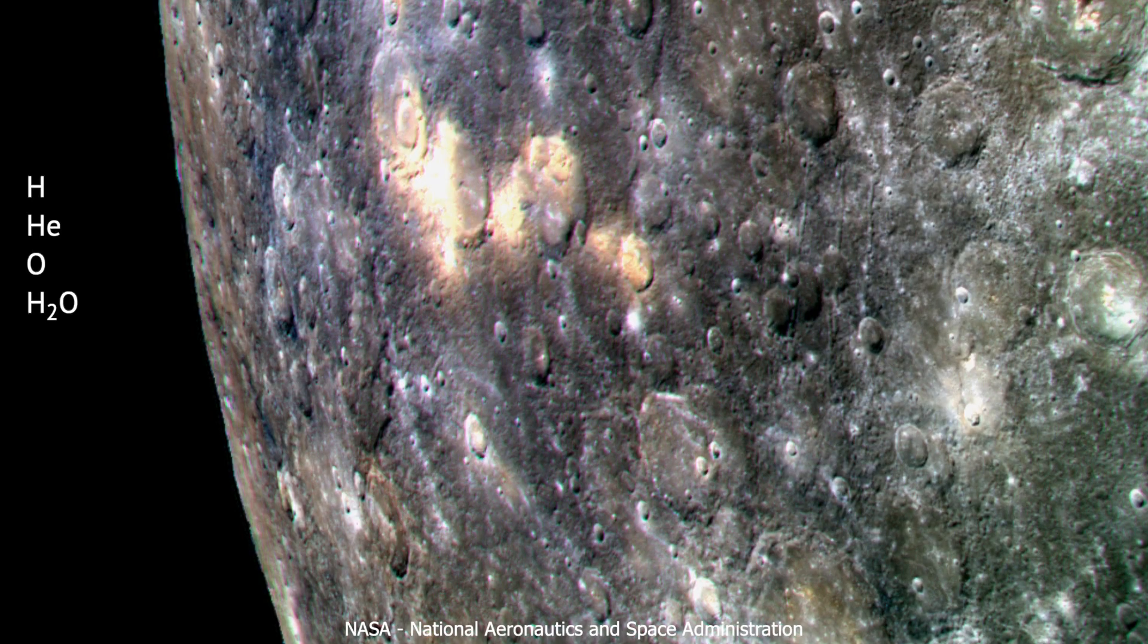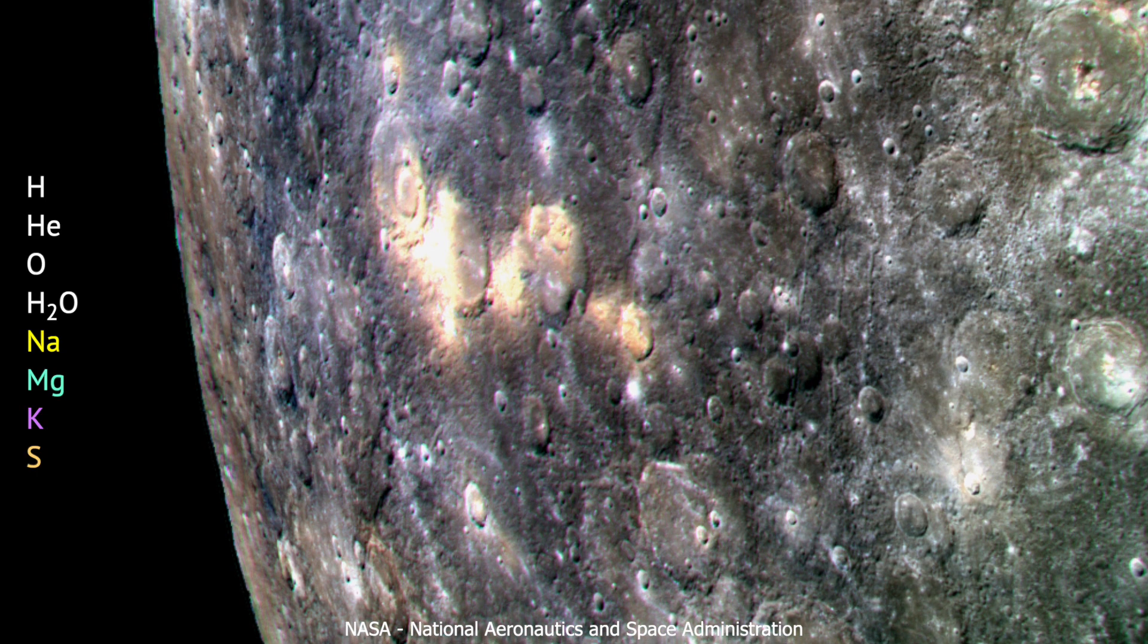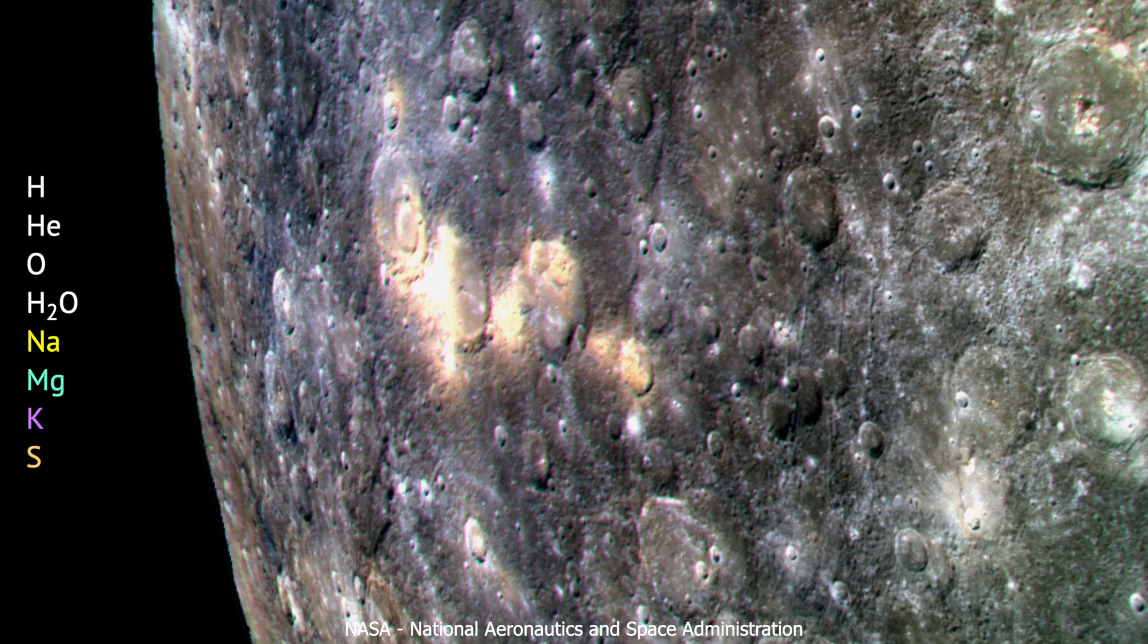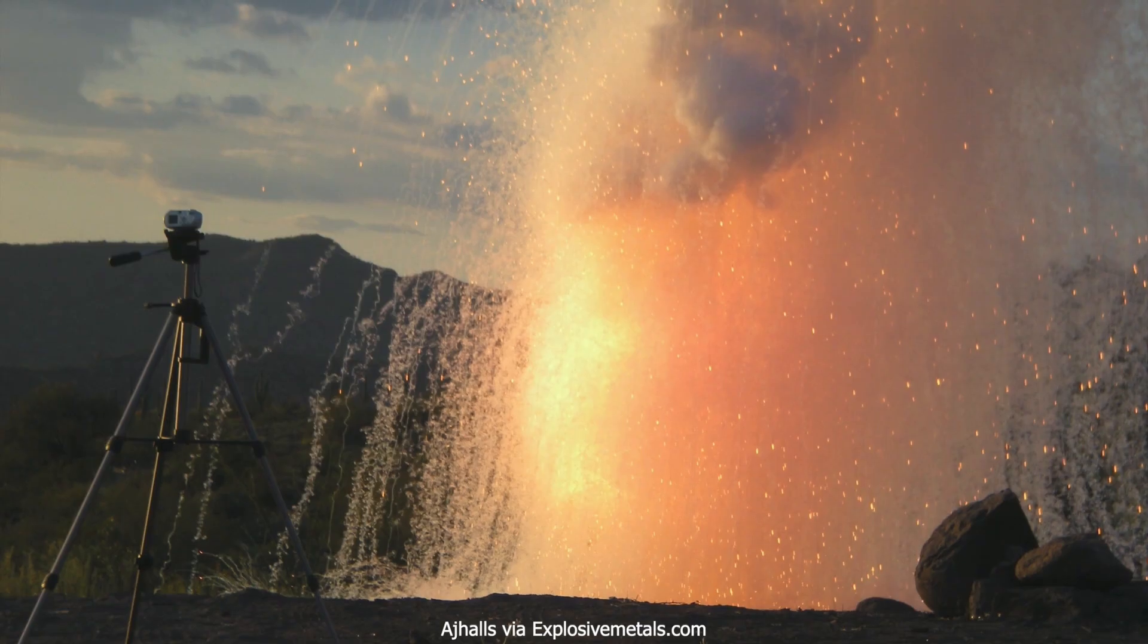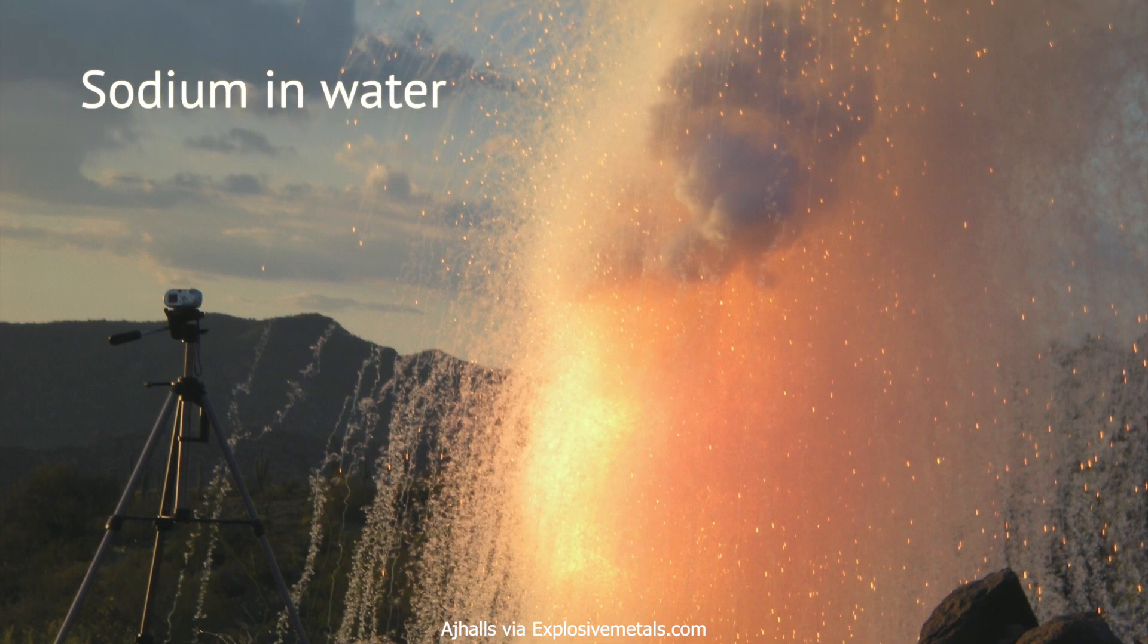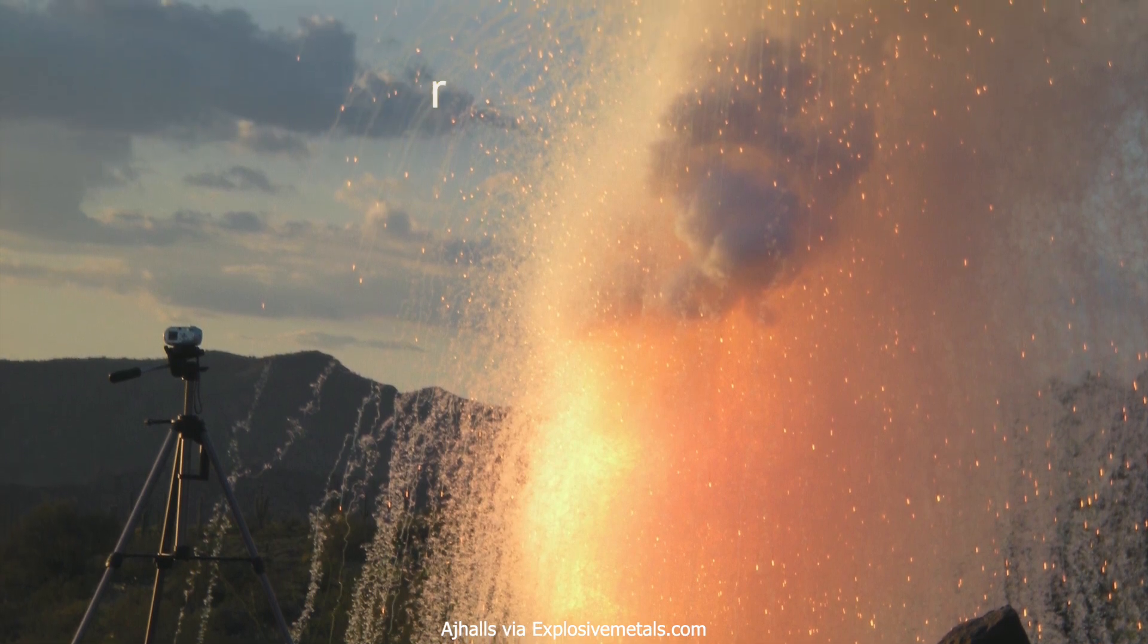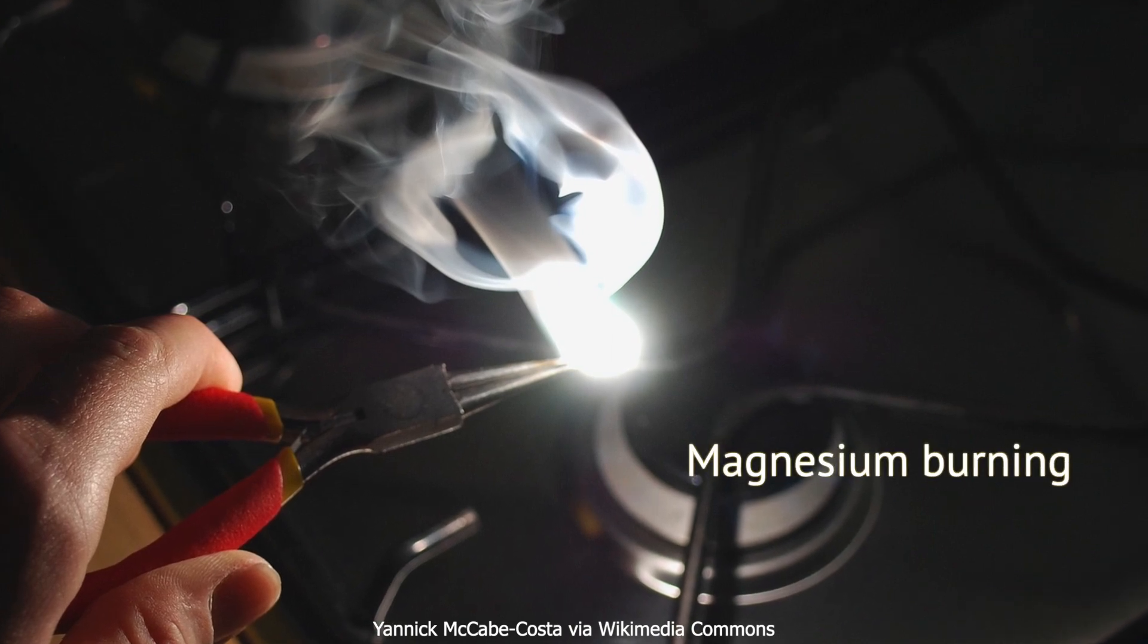The exosphere also contains gaseous sodium, magnesium, potassium and sulfur. All of these exist as solids on Earth. They are highly reactive. Sodium and potassium explode on contact with water, and magnesium burns easily with a searing white light. They are thought to come from rocks on the hot side of Mercury.